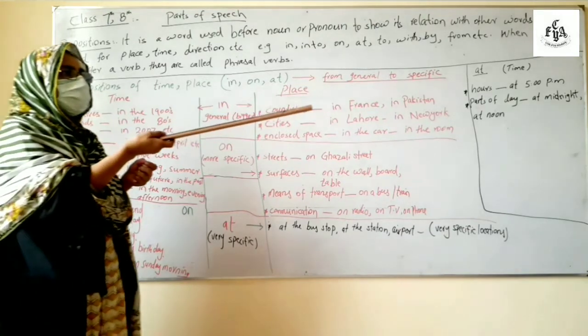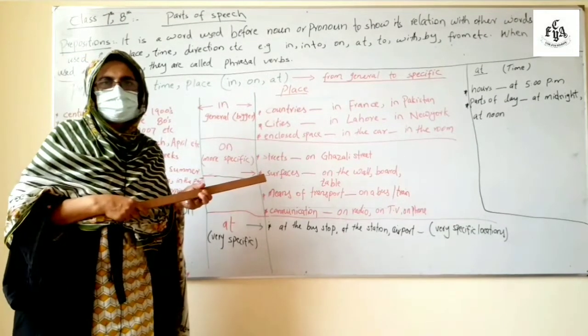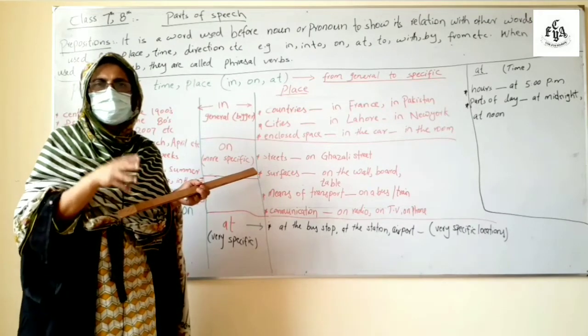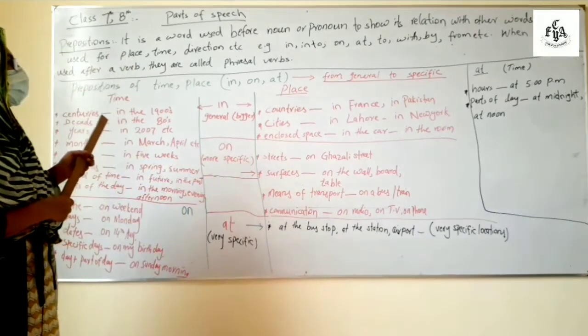For example, if I say the notebook is on the dice. If you take out on that will be the notebook is the dice. Totally meaningless and senseless sentence.